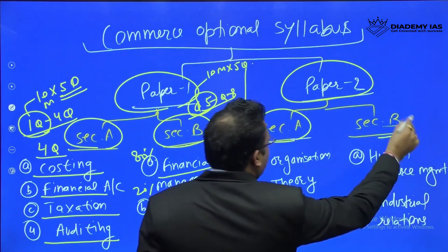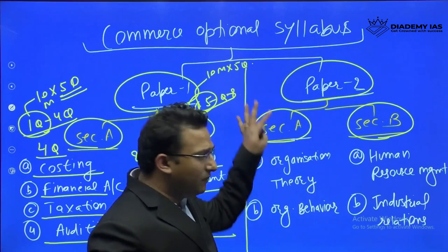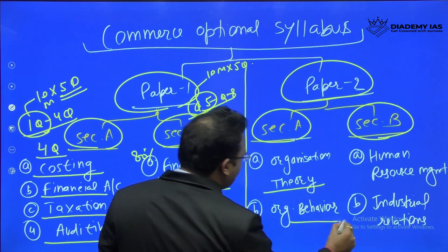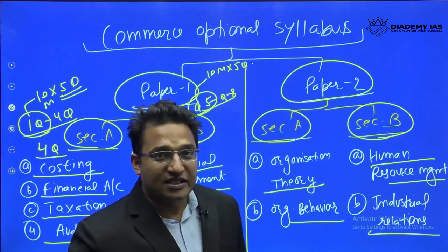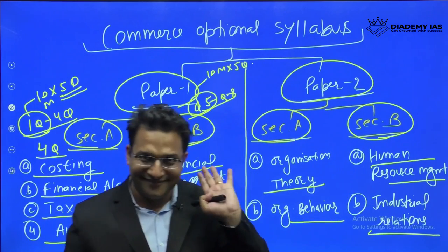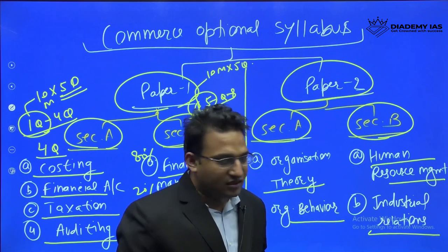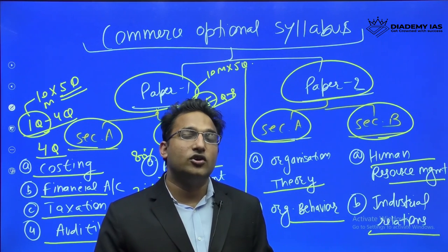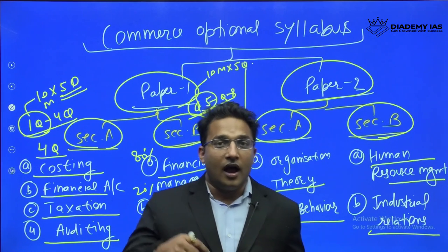In Paper 2 there are Section A and Section B, with the same pattern as Paper 1 — four plus four, eight questions total. In Section A, the two areas are Organisation Theory and Organisation Behaviour. In Section B, the two areas are Human Resource Management and Industrial Relations. The weightage is almost equal across all four areas — sometimes OT will have more marks than OB and vice versa, similarly HRM and IR alternate. Every topic must be prepared; no topic is less important.